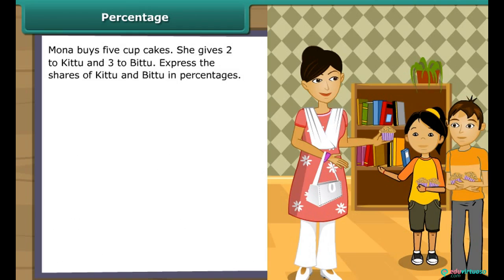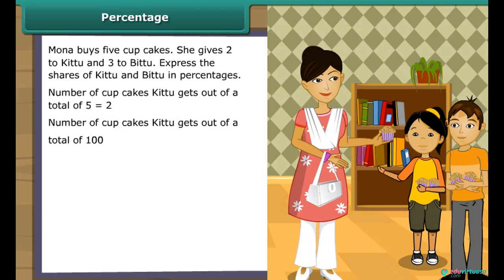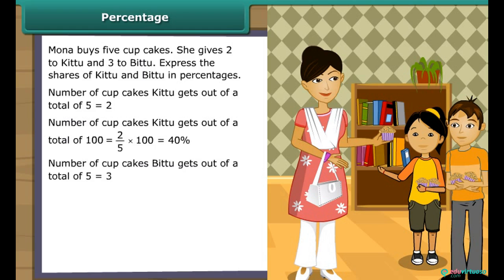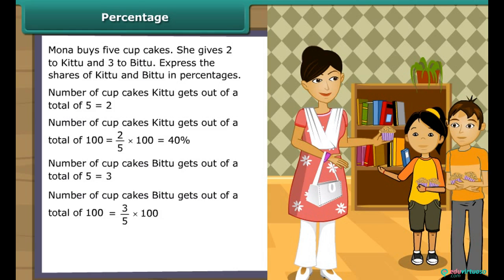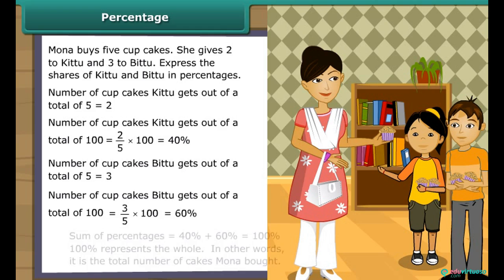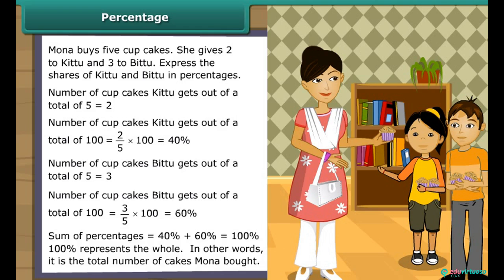Moona buys 5 cupcakes. She gives 2 to Kittu and 3 to Bittu. Express the shares of Kittu and Bittu as percentages. Number of cupcakes Kittu gets out of 100 equals 2 upon 5 into 100, which equals 40%. Number of cupcakes Bittu gets out of 100 equals 3 upon 5 into 100, which equals 60%. The sum of percentages equals 100%, which represents the whole.